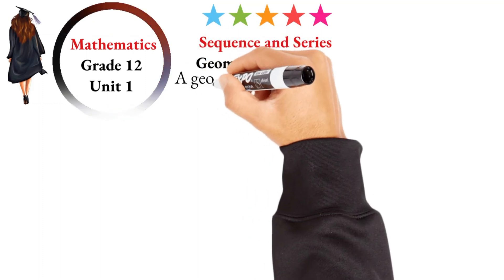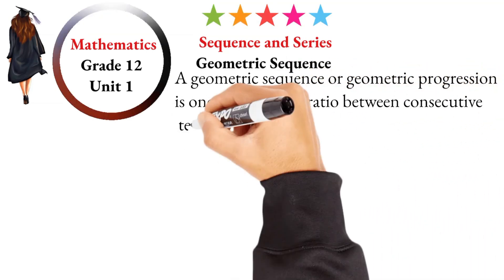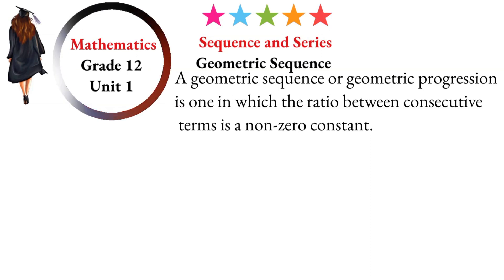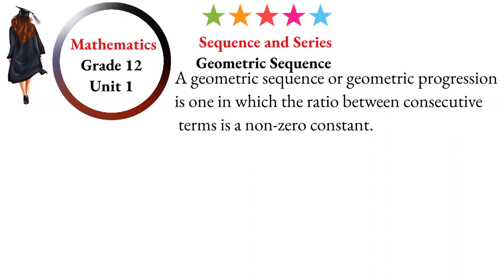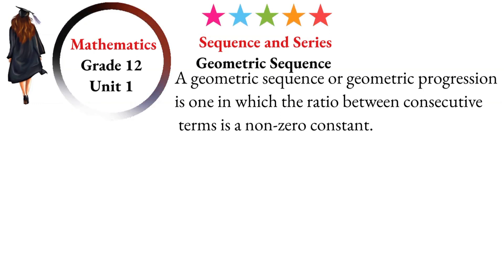A geometric sequence, or geometric progression, is one in which the ratio between consecutive terms is a non-zero constant. Looking at the first term, second term, and third term — the ratio between consecutive terms is the common ratio.